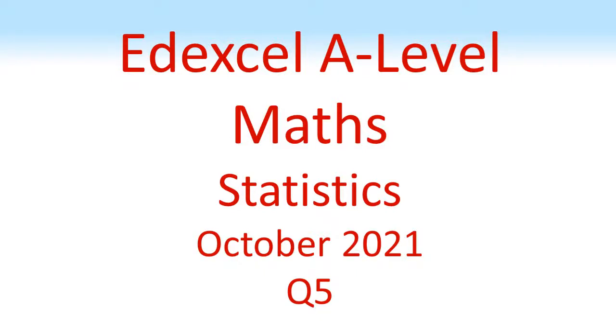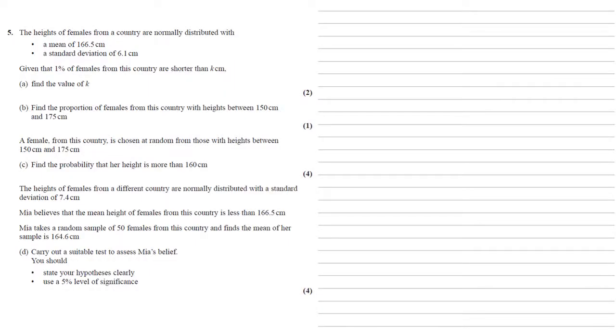LXL A Level Maths Statistics October 2021 Question 5. The heights of females from a country are normally distributed with a mean of 166.5 centimeters and a standard deviation of 6.1 centimeters. Given that 1% of females from this country are shorter than K centimeters, for part A we need to find the value of K.